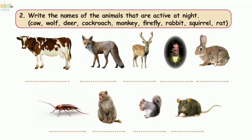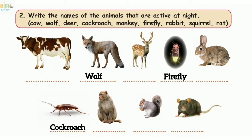Section 2: Write the names of the animals that are active at night. Cow is active in the daytime, so not listed. Wolf is active in the night time — mention the wolf. Deer is active in the daytime. Fireflies are active in the nighttime — mention fireflies. Rabbit is active in the daytime. Cockroach and rat are active at night.